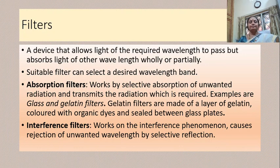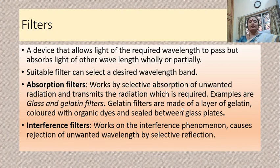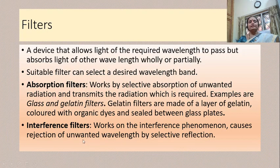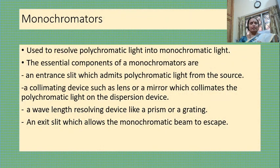There are two types of filters: absorption filters and interference filters. Absorption filters work by selective absorption of unwanted radiation and transmit only the required radiation. Examples are glass and gelatin filters. Gelatin filters are made of a layer of gelatin colored with organic dyes and sealed with glass. Interference filters work on the interference phenomenon, causing rejection of unwanted wavelengths by selective reflection.